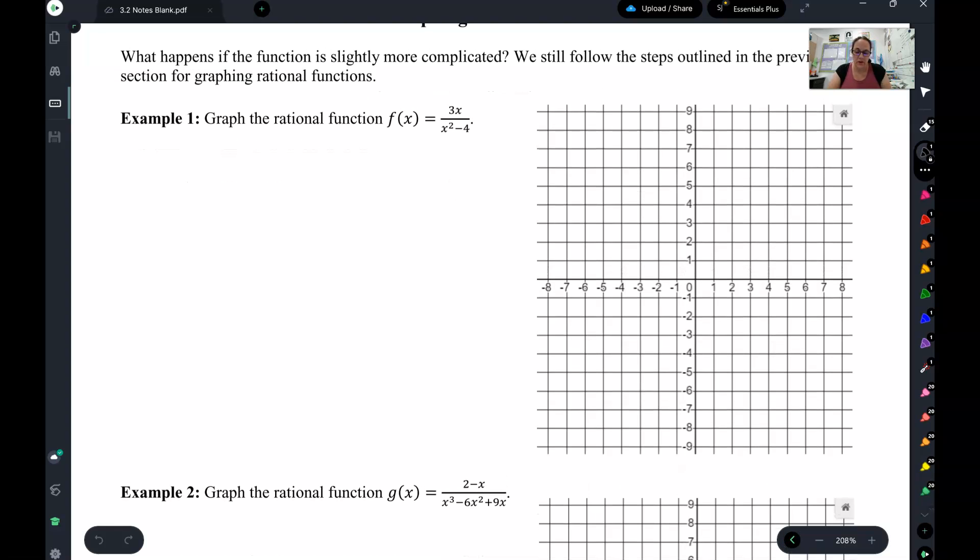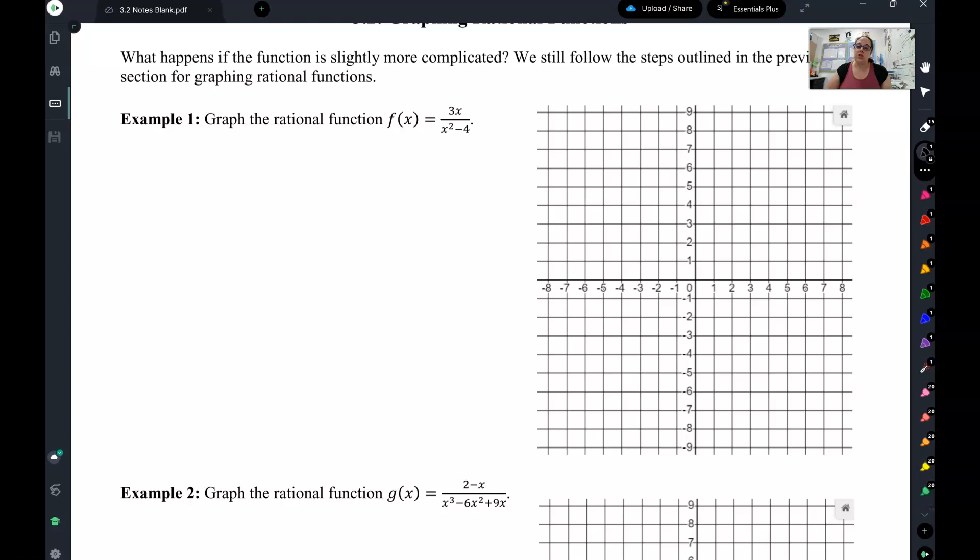So we're going to start right here with example 1. And I'm going to structure these very similar to how we ended in 3.1. I'm going to have you start by finding our five: domain, x-intercepts, y-intercepts, vertical asymptotes, and end behavior.